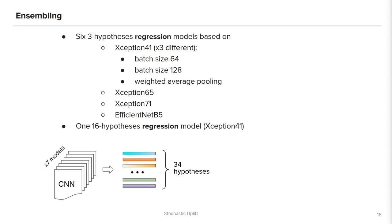Our final ensemble consists of seven models: three different versions with Xception 41 backbone, Xception 65, Xception 71 and EfficientNet B5. And we also have one model based on Xception 41 with 16 output hypotheses. This model can generate very diverse trajectories and is very useful in the ensemble. By running inference on all these models we get in total 34 hypotheses and their confidences. But we are allowed to submit only three final hypotheses for evaluation.